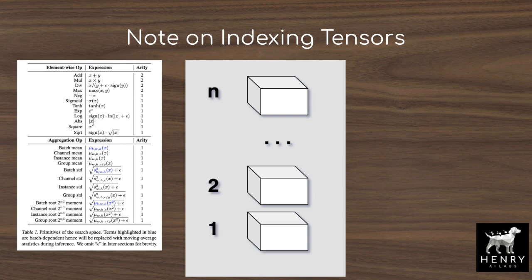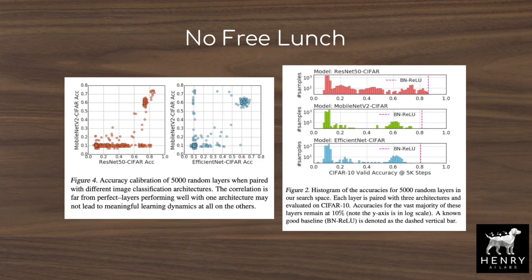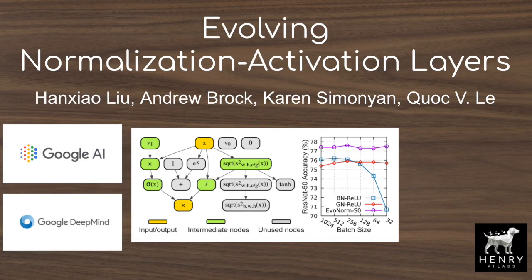The authors don't just test this on ResNet-50s — they integrate the layer with MobileNet V2 and EfficientNet models as well, to avoid overfitting to a single architecture when discovering this new normalization activation layer. This video will explain the design space the researchers come up with for TensorIn, TensorOut normalization activation layers, and how they use evolutionary search and multi-objective optimization to discover this new layer.